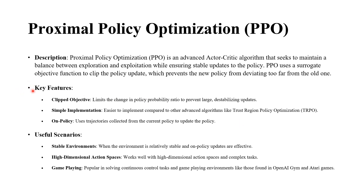The key features: one of the main ones is the clipped objective. The idea is to limit the change in the policy probability ratio to prevent large destabilizing updates. It's easy to implement compared to trust region policy optimization. As it is an on-policy method, it uses trajectories collected from the current policy to update the policy.